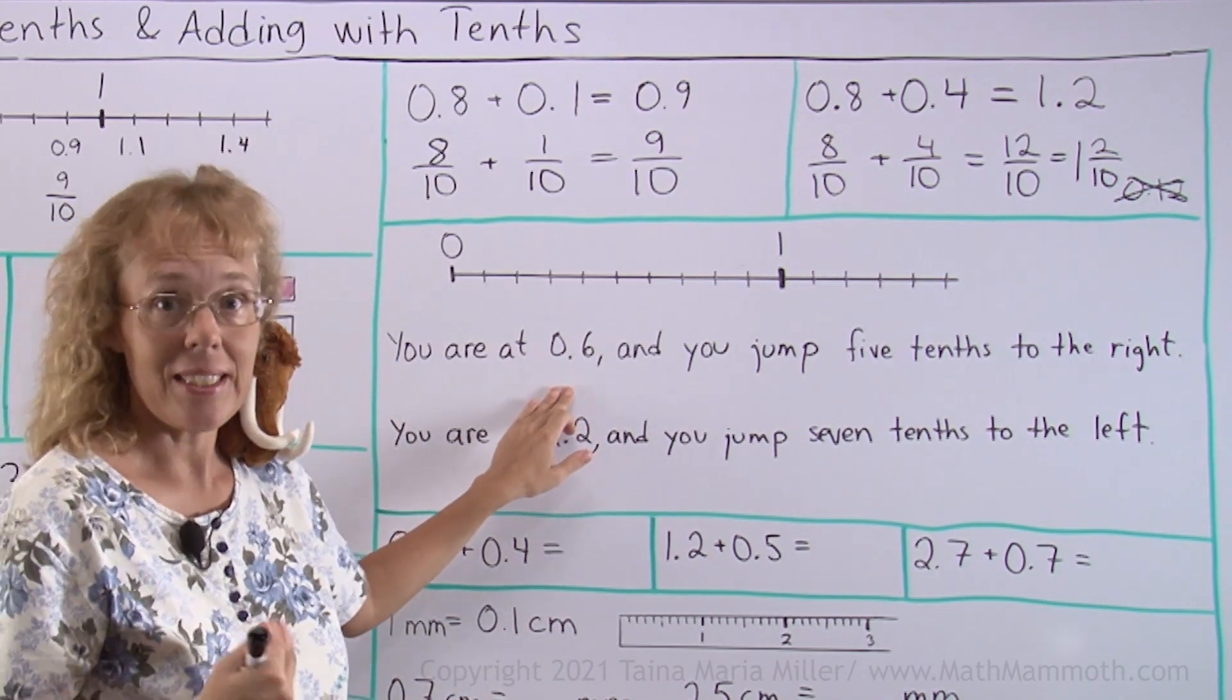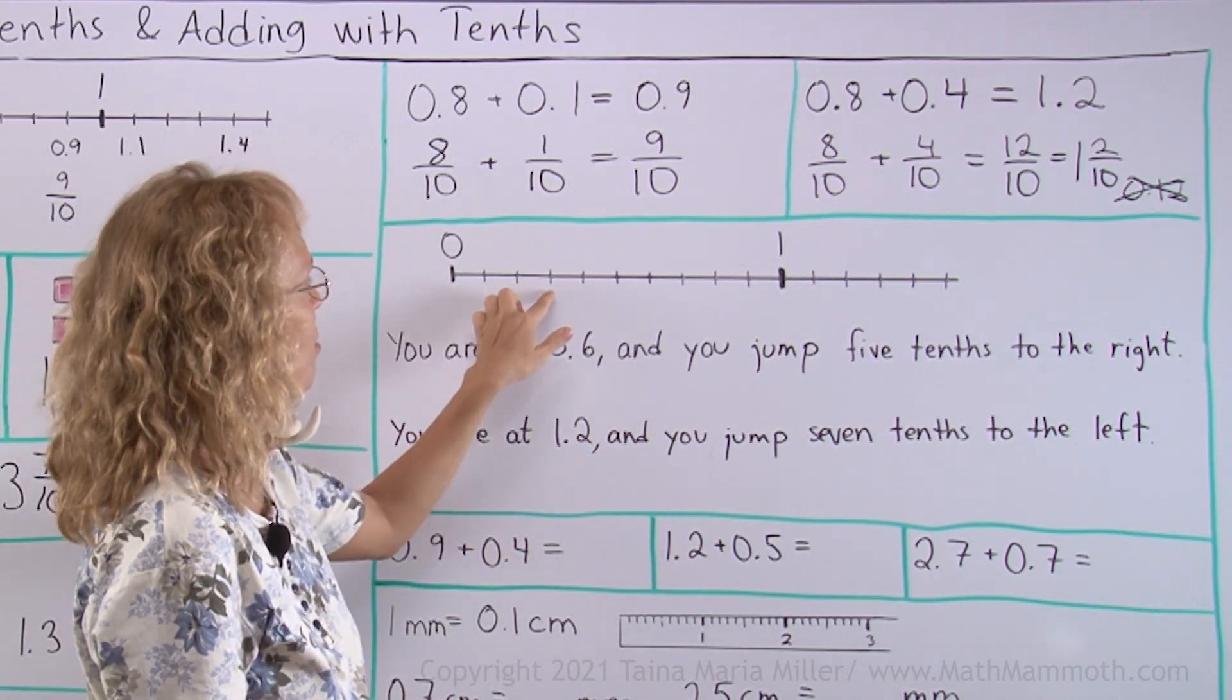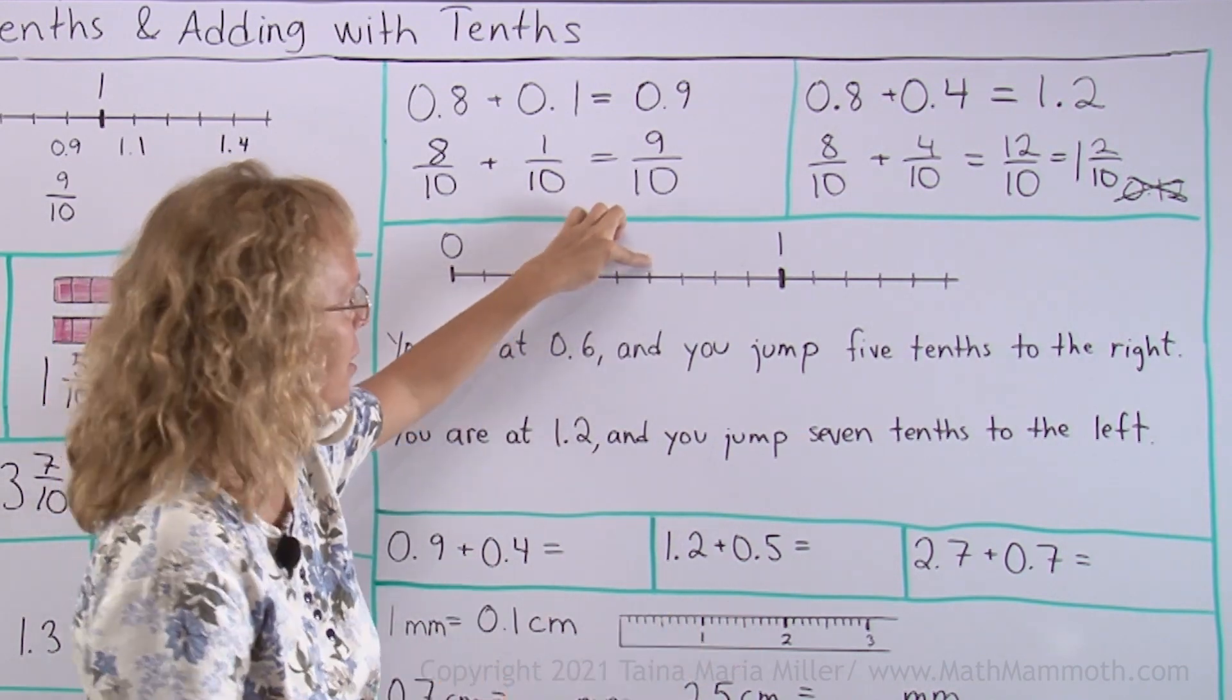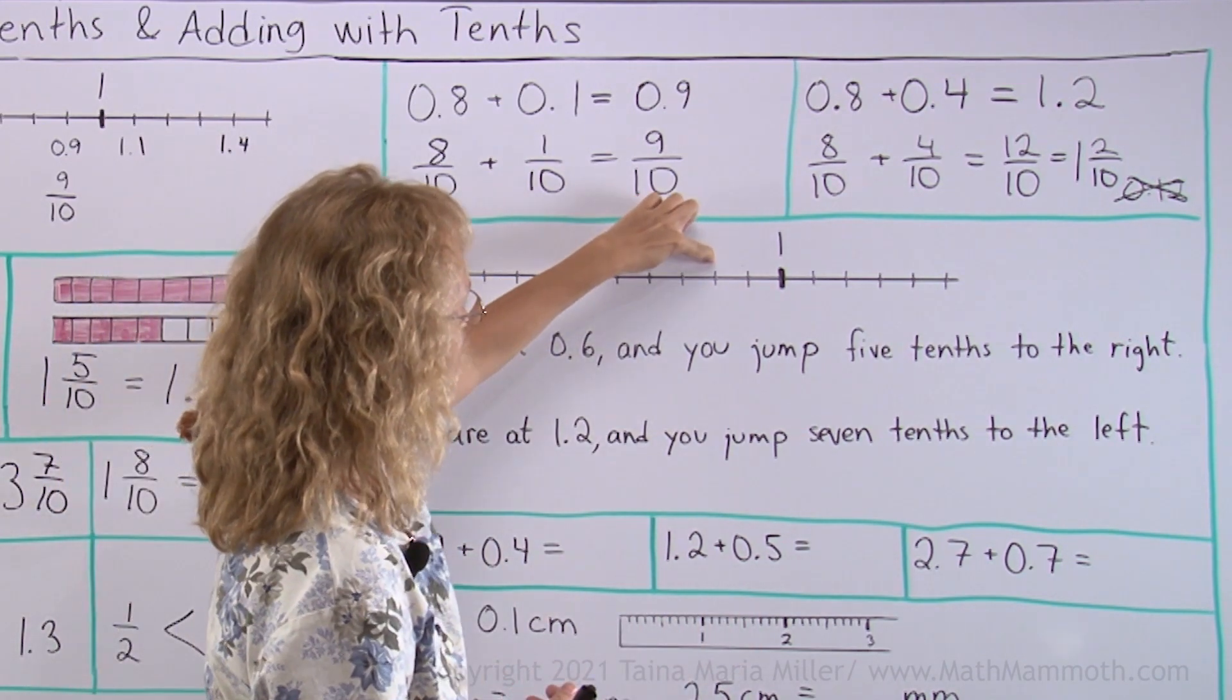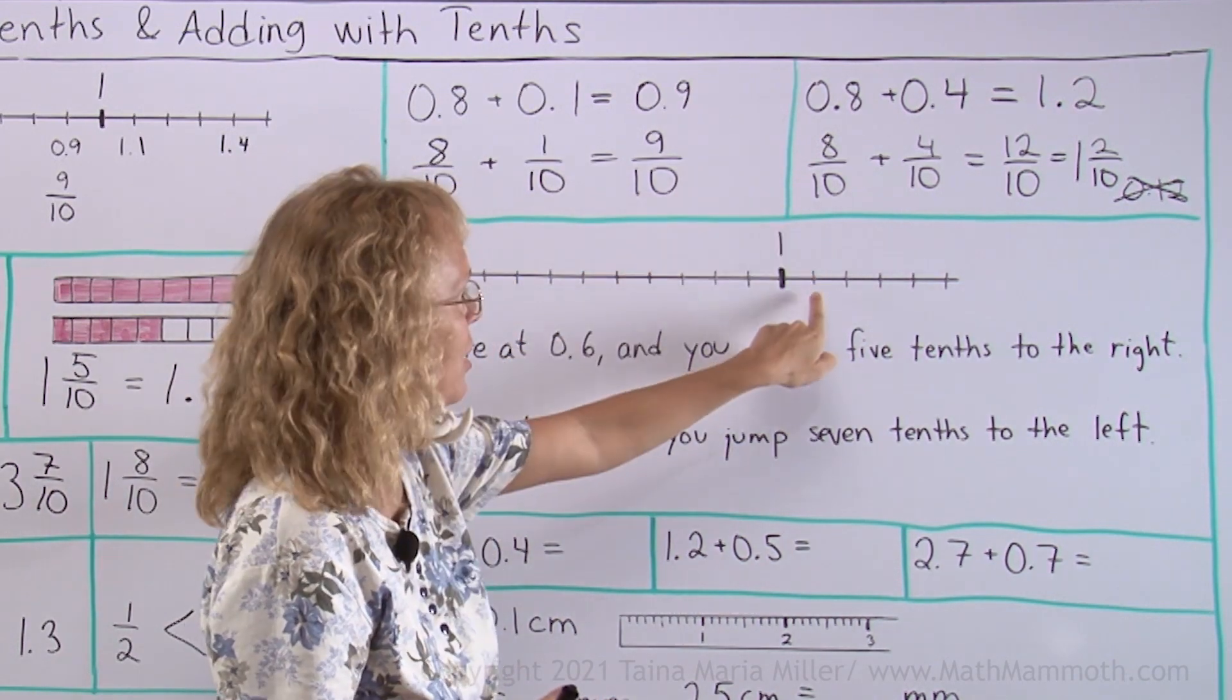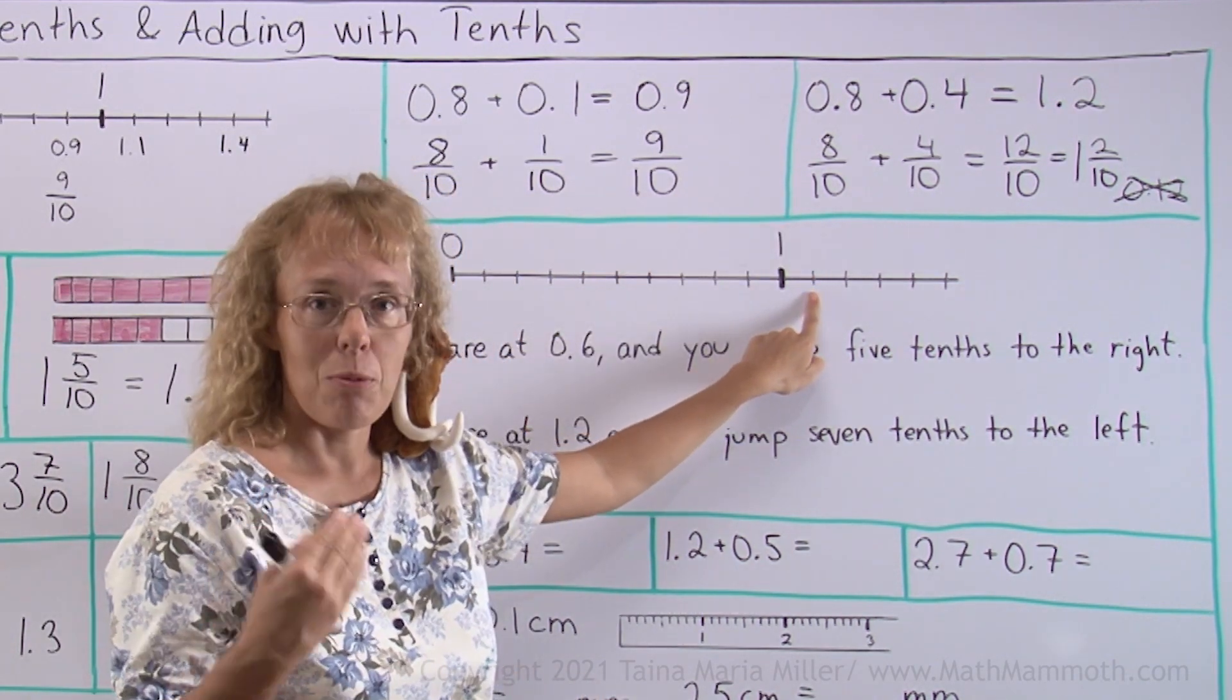You are at 0.6, 6 tenths. 1, 2, 3, 4, 5, 6. Right there. And then you jump 5 tenths to the right. So 1, 2, 3, 4, 5. Where do I end up? Can you see?